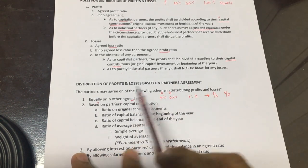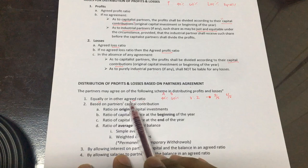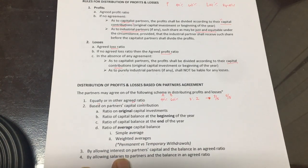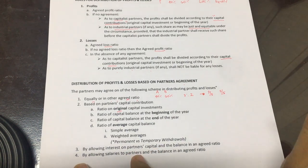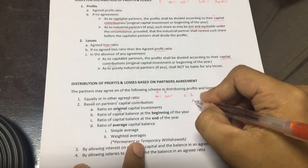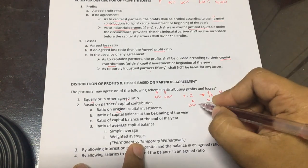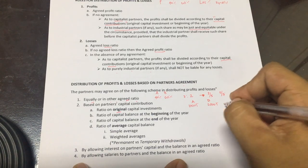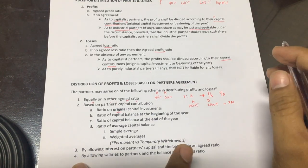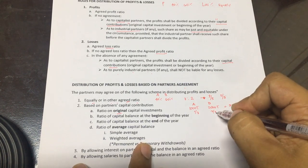Second, partners may agree that profits and losses will be divided based on their capital contributions ratio. This can be the original capital investment — meaning the initial investment in the first year of operation. For example, if Partner A's initial investment is 1 million and Partner B's is 2 million, simply add the two to get 3 million, then express as fractions: 1/3 and 2/3. That's their ratio.